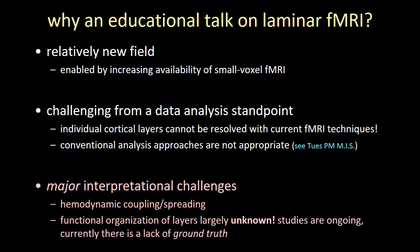There are also major interpretational challenges. We know that there's hemodynamic coupling and spreading across the layers. It's still not known whether blood flow regulation in the brain is specific enough to give rise to focal blood flow changes within individual layers. Also, the functional organization of layers is largely unknown. Currently, there's a lack of ground truth, but this also means it's exciting — it's an opportunity to learn something new about the brain.